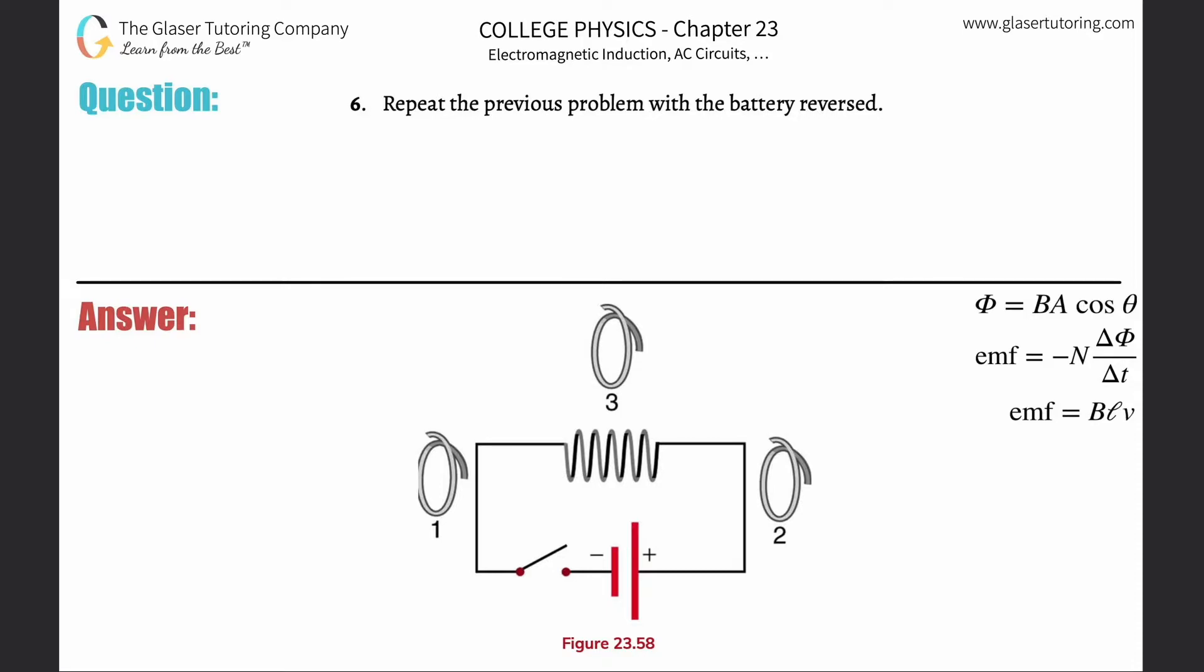Number six: repeat the previous problem with the battery reversed. All right, so what we're going to do is shortcut it here. Okay, so here's the original picture. What's going to happen is make this now the positive terminal, so that'll be the long one, and make this then the negative terminal. Okay, so this would be a little shorter now.